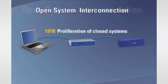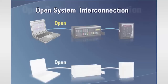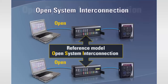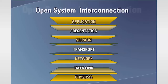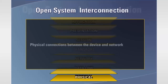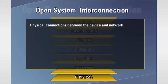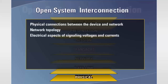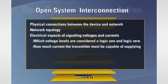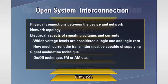Faced with the proliferation of closed network systems, in 1978, the International Standards Organization defined a reference model for communication between open systems which is called the Open System Interconnection Model. This model is composed of seven layers. Each layer has a defined purpose and interfaces with the layer above and below it. The physical layer includes elements involved with the actual transmission and reception of signals such as physical connections between the device and the network, network topology, electrical aspects of signaling voltages and currents — for example, which voltage levels are considered a logic 1 and logic 0 — in addition to how much current the transmitter must be capable of supplying. Signal modulation technique — for example, is it a simple on-off technique, or FM or AM, etc. — and mechanical aspects such as the connectors and physical medium to be used.